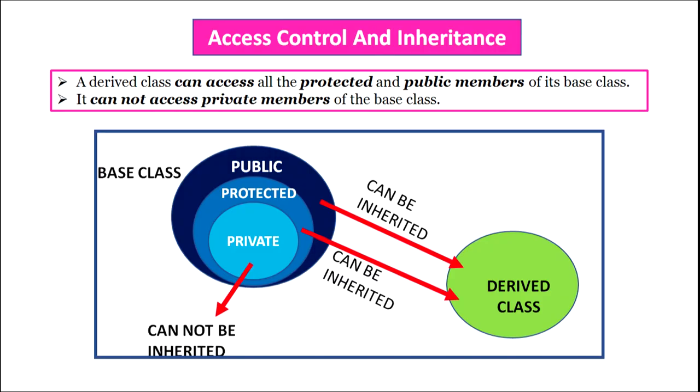A derived class can access all the protected and public members of its base class. Remember, it cannot access the private members of the base class. All the public and protected members become members of the derived class, but private members of the base class are never inherited. There can be three types of visibility mode: public, private, or protected.